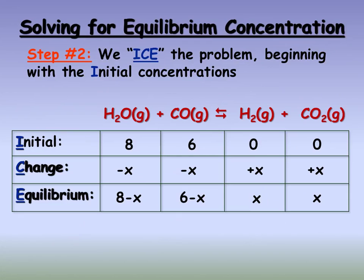For step 2, we create an ICE table — a memory device to think about the reaction in terms of the initial conditions, how things change, and what the corresponding concentrations would be at equilibrium. The problem initially stated we had 8 molecules of water and 6 molecules of carbon monoxide. We didn't have anything else, which means we started out with only reactants. That's why there's zero hydrogen and zero carbon dioxide in the initial row.